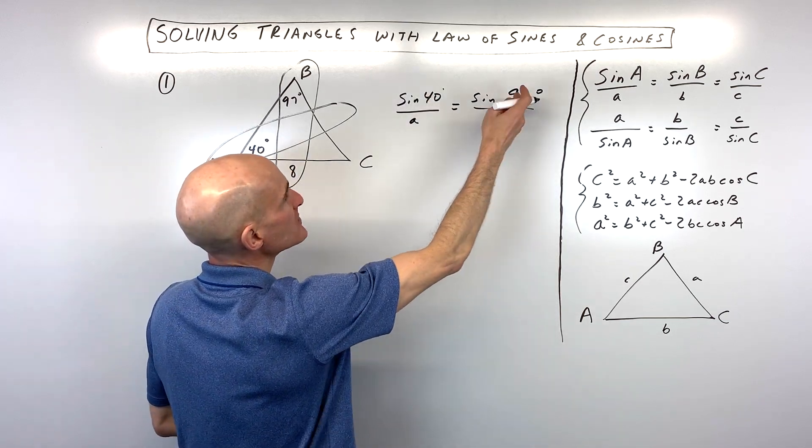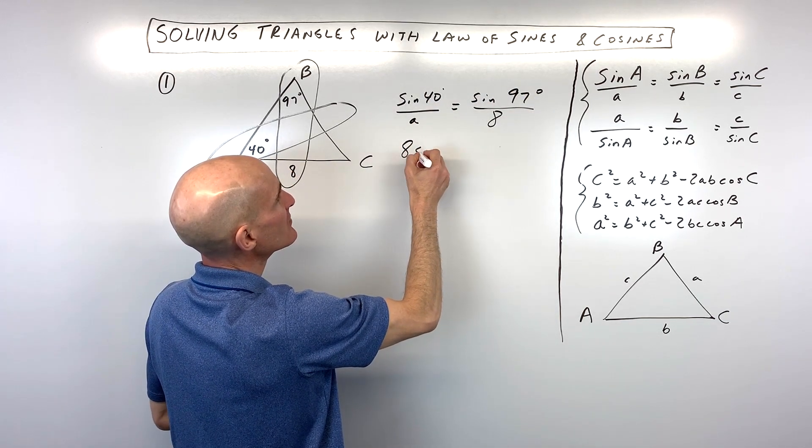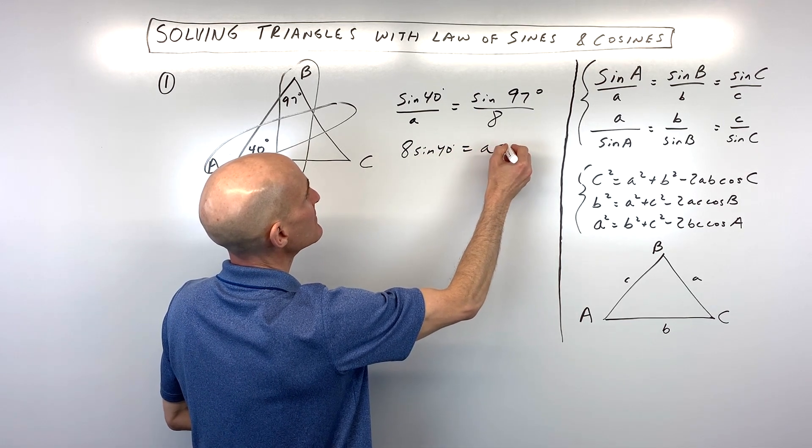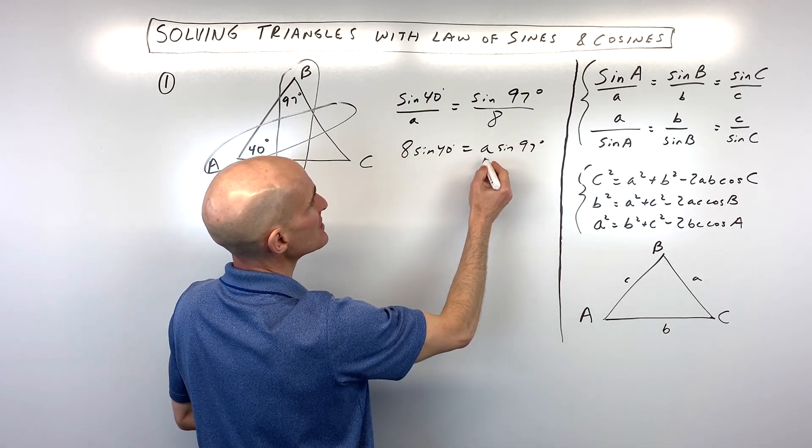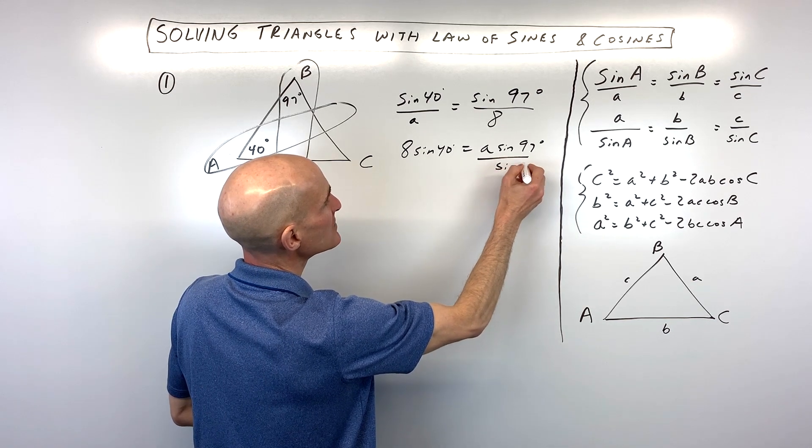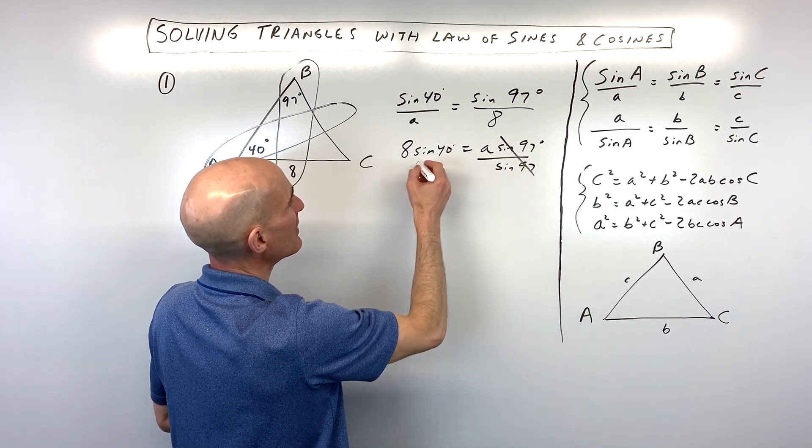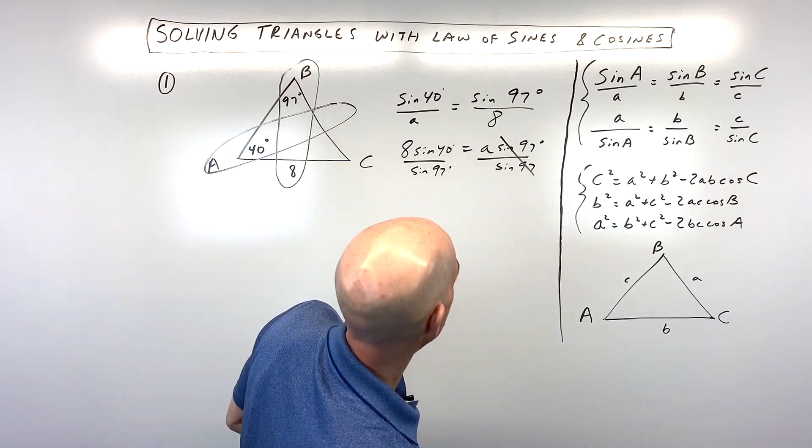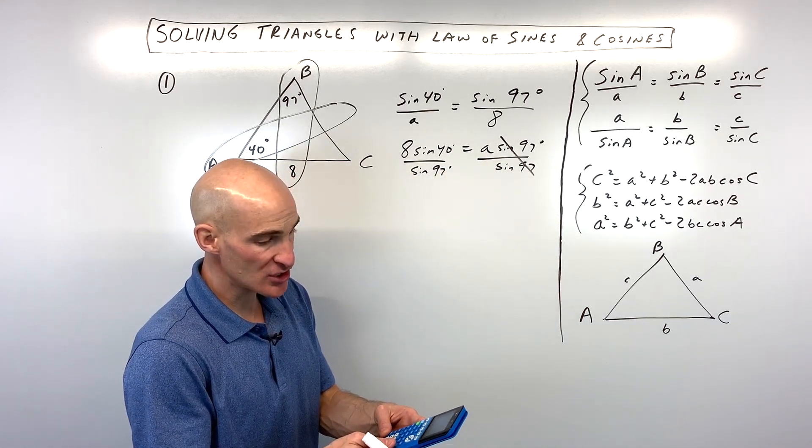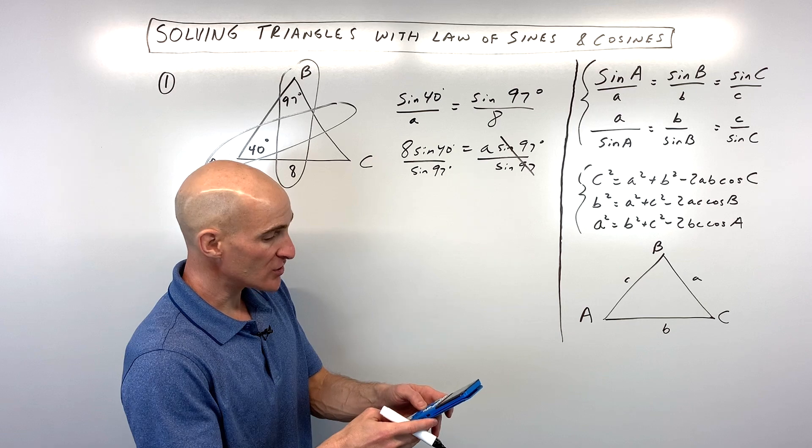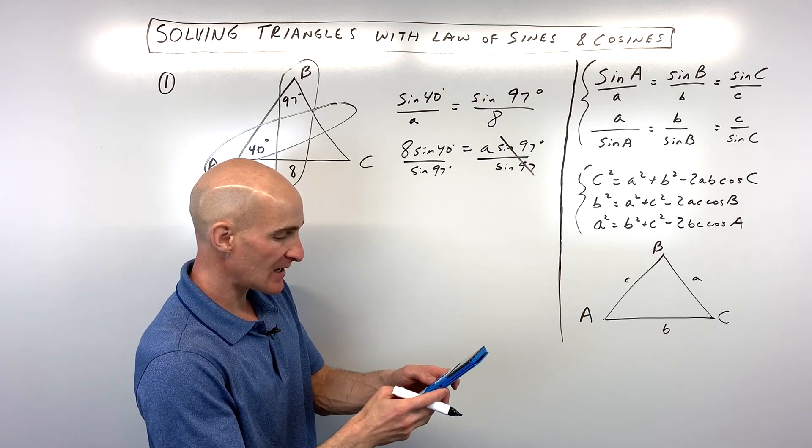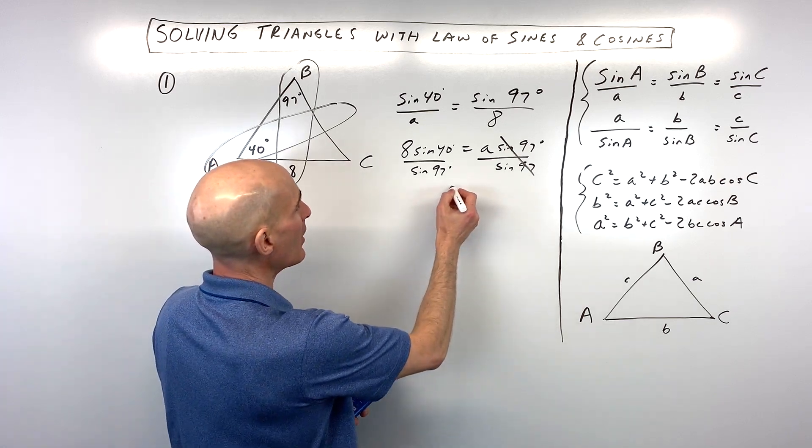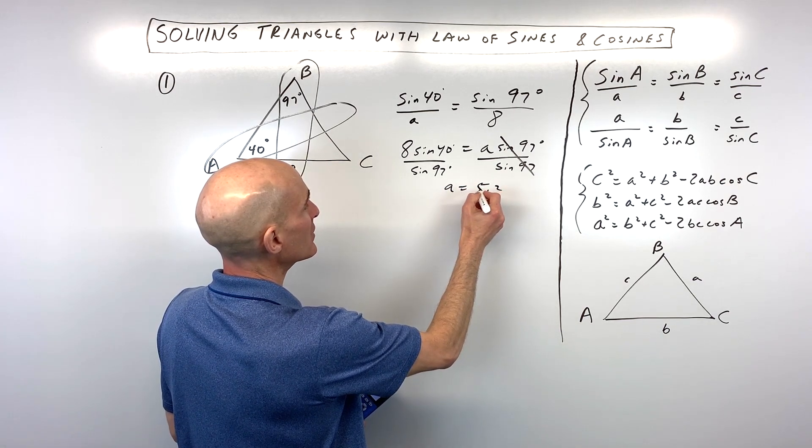And that equals the ratio of the sine of 97 degrees over its side opposite, which is 8. So, now all we have to do is cross-multiply on the diagonals. That's going to give us 8 times the sine of 40 degrees equals A times the sine of 97 degrees. To get A by itself, we just have to do the opposite of multiplying by 97, divide by the sine of 97. And let's see what that comes out on our calculators. Now, you might want to make sure you check your mode and make sure you're in degrees. So, 8 sine 40 divided by sine of 97. And that's coming out to about 5.2. I'm just going to round. So, A equals 5.2.